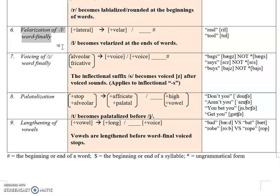Velarization of /l/ word-finally. /l/ is a lateral sound and it gains the feature [+velar] — meaning velarized — at the end of a word. Velarized means your tongue pushes back a little bit. Let's try the word 'real' — pronounce 'real' — now contrast that with the word 'lip.'